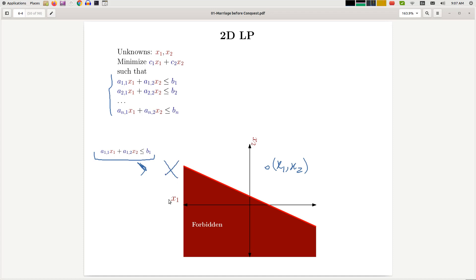What is the region of space where this inequality holds, where a11*x1 + a12*x2 is bigger than b1? Well, we can see that that's an equation of a line, and therefore that's going to be one side of the line, depending on the signs of these numbers.